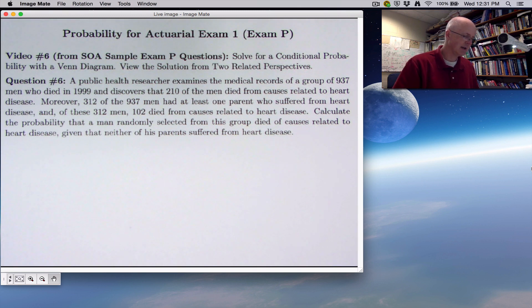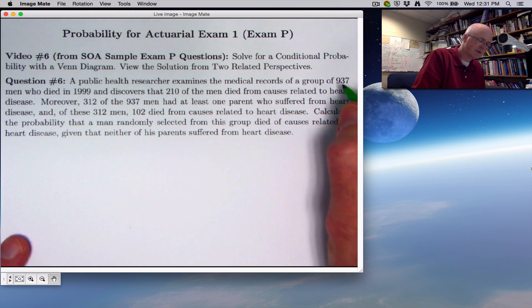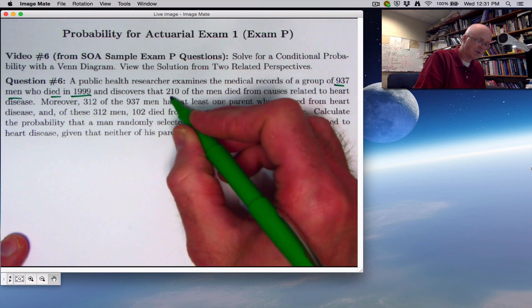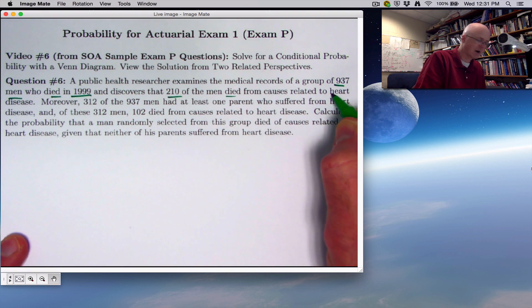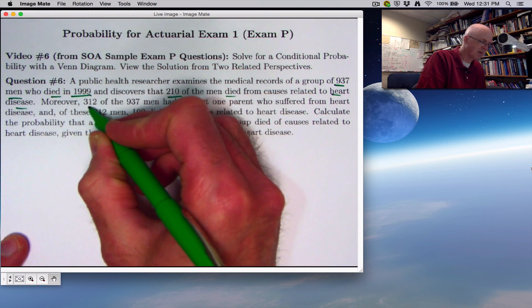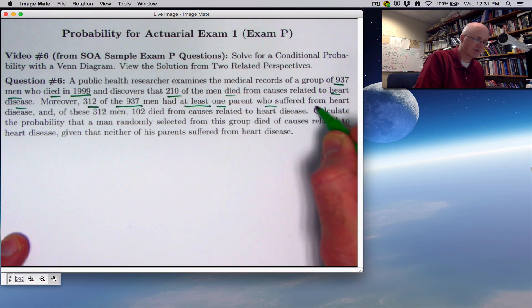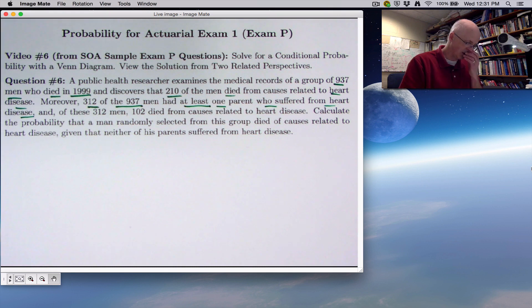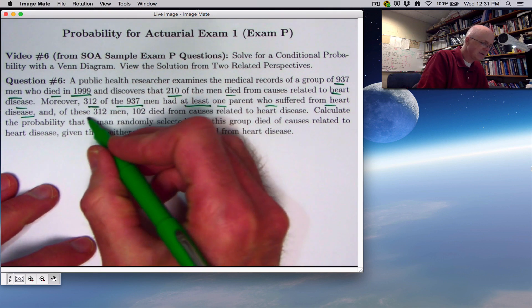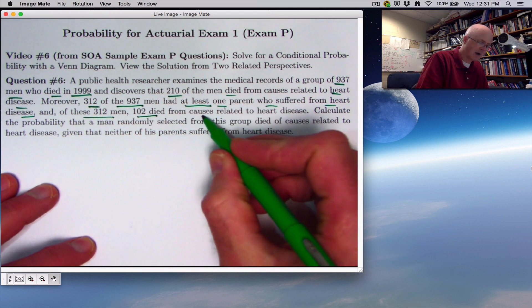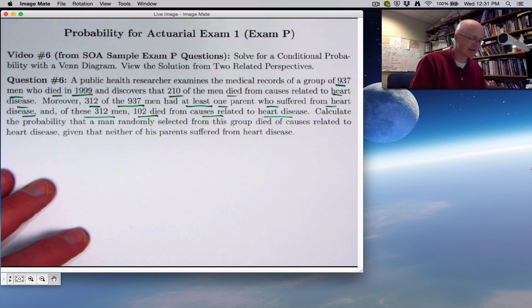So it's question number six. A public health researcher examines the medical records of a group of 937 men who died in 1999 and discovers that 210 of those men died from causes related to heart disease. Moreover, 312 of the 937 men had at least one parent who suffered from heart disease. Of these 312 men, 102 died from causes related to heart disease. That should make sense - if there was a genetic link, there should be a higher chance that they're going to die from heart disease.